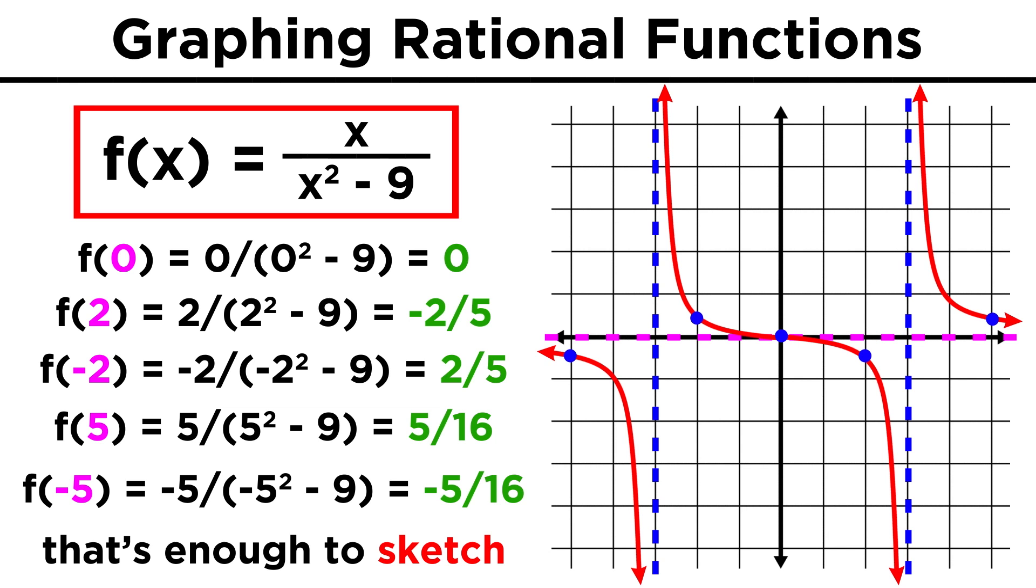Let's take note that a function can sometimes cross an asymptote, the way this function crosses the horizontal asymptote in the middle section.